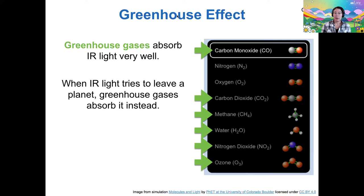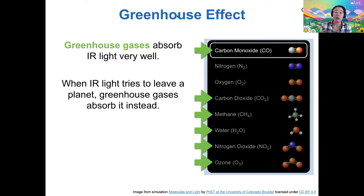I hope you were able to appreciate in the activity that looking at the climate of Venus versus Mars, how their actual observed temperature compares to their equilibrium temperature can tell us how much greenhouse effect that planet is experiencing. And as you saw from the table with their atmospheric compositions and the total amount of atmosphere, both of those contribute to the overall greenhouse effect those planets experience.